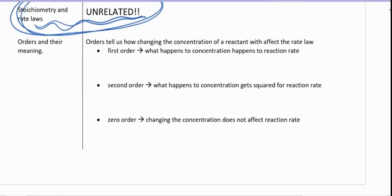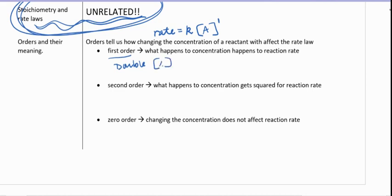Let's talk about the orders. If we have a first order reaction, the rate is equal to some constant times the concentration raised to the power of one. That means whatever happens to the concentration also happens to the reaction rate. In other words, if we double the concentration, we double the reaction rate. If we triple the concentration, we triple the reaction rate, and so on.